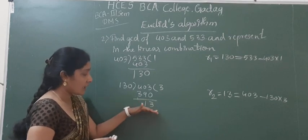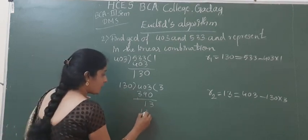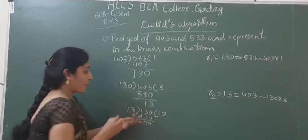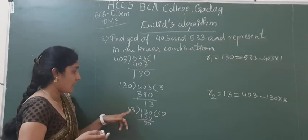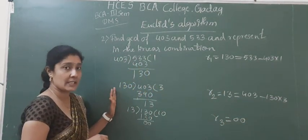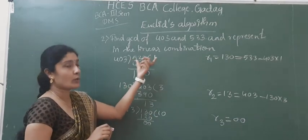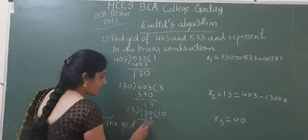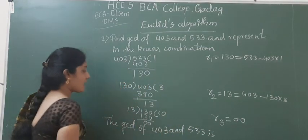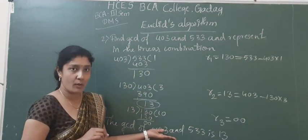Again we got a non-zero remainder, so we continue the procedure until we get zero as remainder. Now we have to divide 130 by 30 — wait, 130 divided by 30: 30 tens are 130, so finally we got the remainder as zero. So R3 = 0. Therefore the GCD — the last non-zero remainder is 30. So GCD of 403 and 533 is 30.